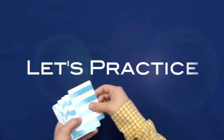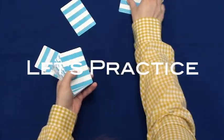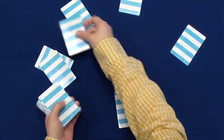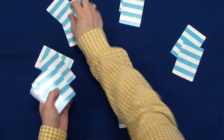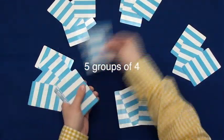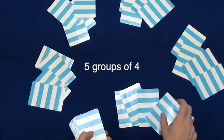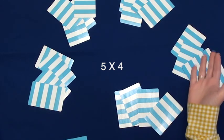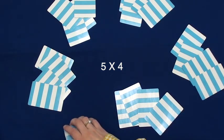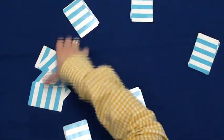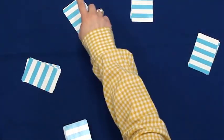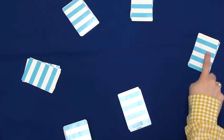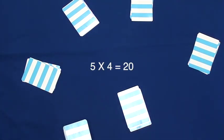Now let's practice. If Mrs. Ackman played a card game with five friends and dealt each player four cards apiece, how many cards would she have dealt out? There are five groups of four cards, or five times four. Let's add that up by skip counting by fours, since we know that each player has four cards. Four, eight, twelve, sixteen, and twenty. Five times four equals twenty.